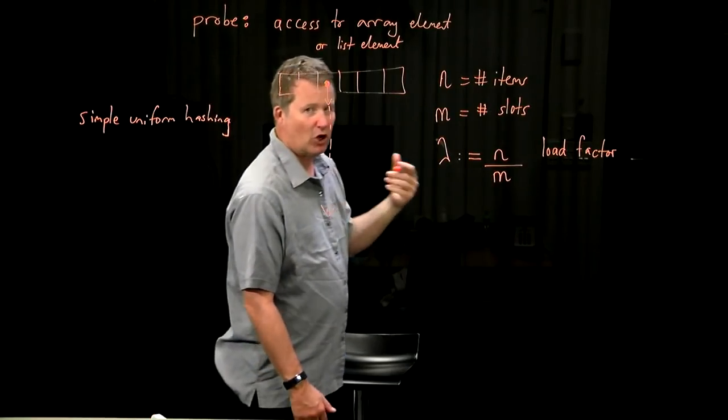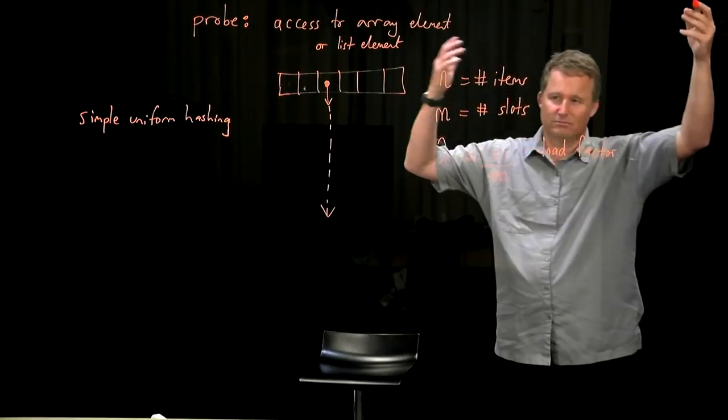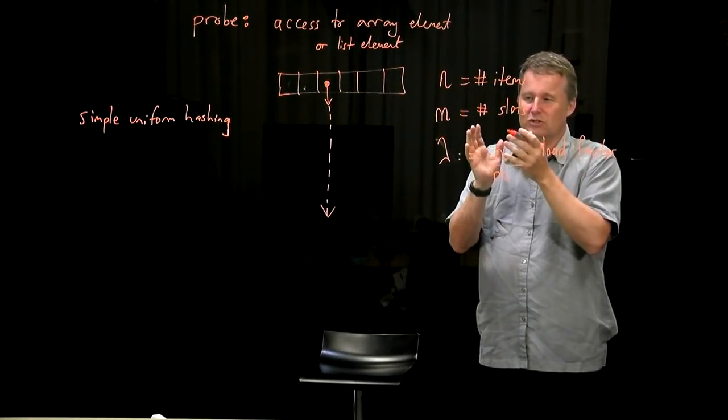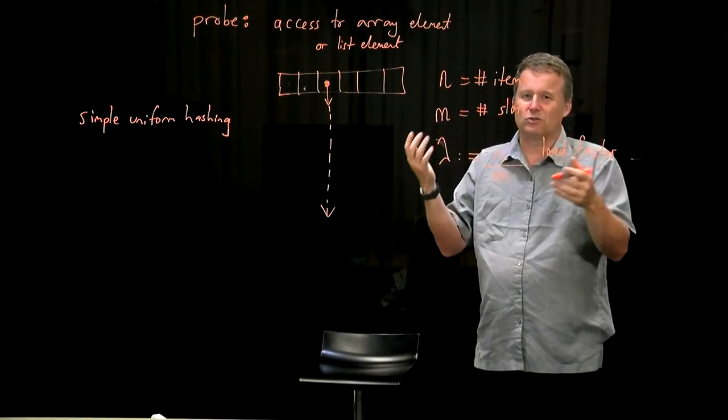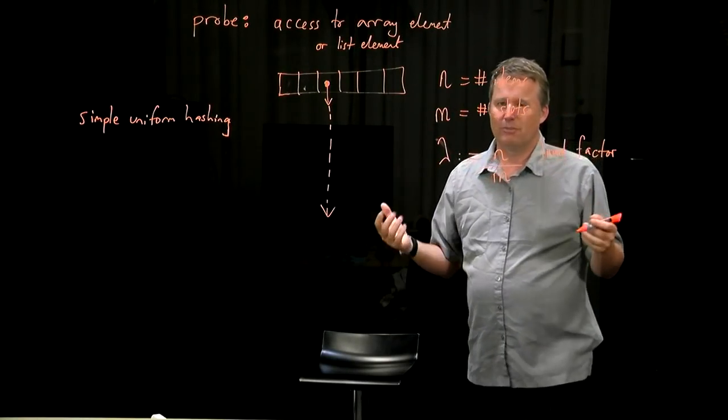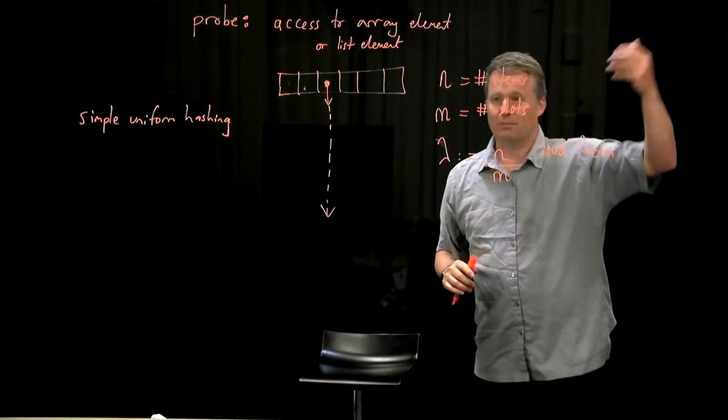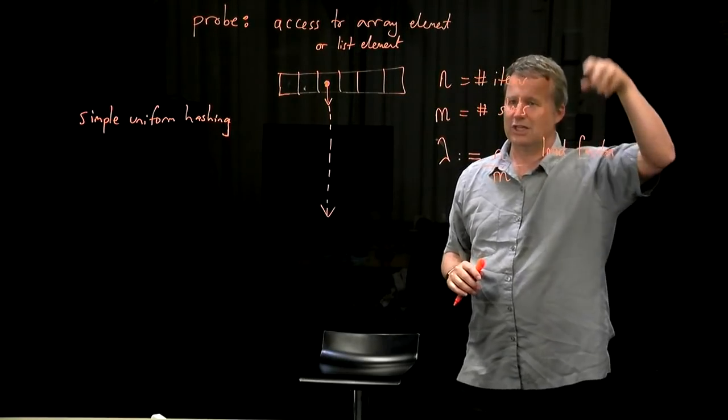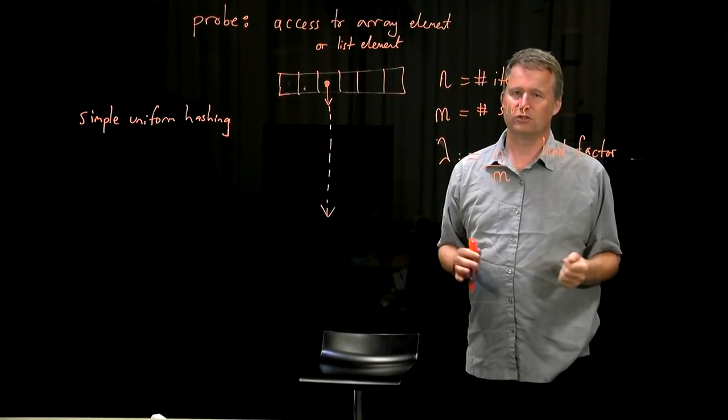Remember that hash functions are supposed to be kind of random looking. If we're getting data from some place which is not maliciously being produced, so that it always hashes to the same spot, we would expect that they would hash to all different spots, sort of on average the same amount. So the basic idea here is that your data comes in independently, every new data item is equally likely to go to any of the slots under the hash function, and it's independent of all the previous ones.